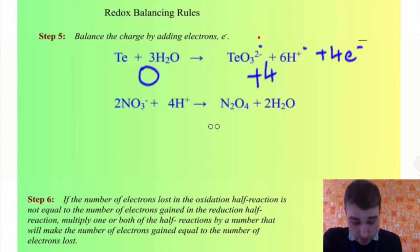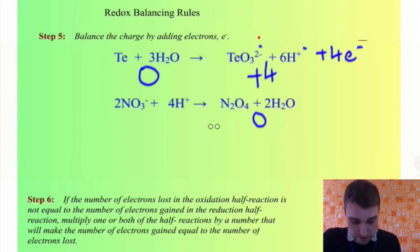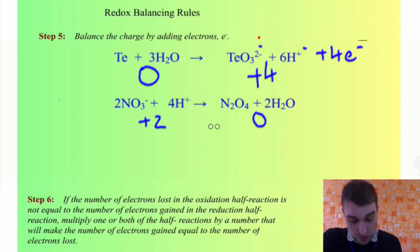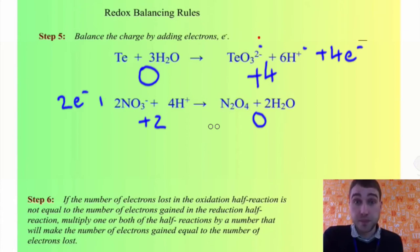Looking at the bottom equation, the charge on the right-hand side is zero. On the left-hand side, we've got two negatives and plus 4, so minus 2 plus 4 gives a total charge of plus 2. That means we need to add two electrons to the left-hand side of the bottom equation.